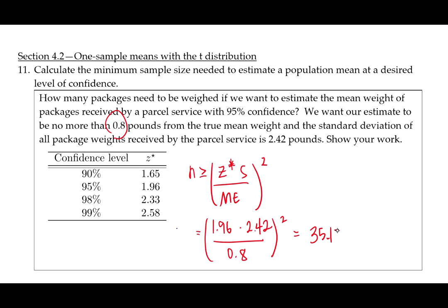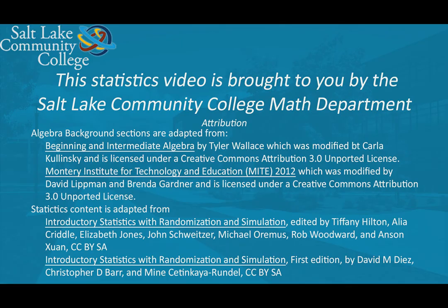This is the minimum sample size. We can't find 0.15 of a package to weigh. And so therefore we're going to round up because if we round down to 35 we'll be below the minimum. And so the sample size we need is 36.